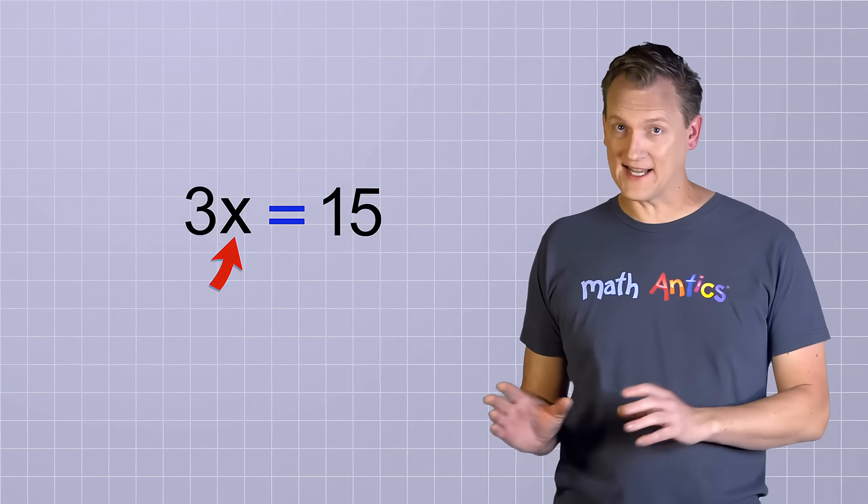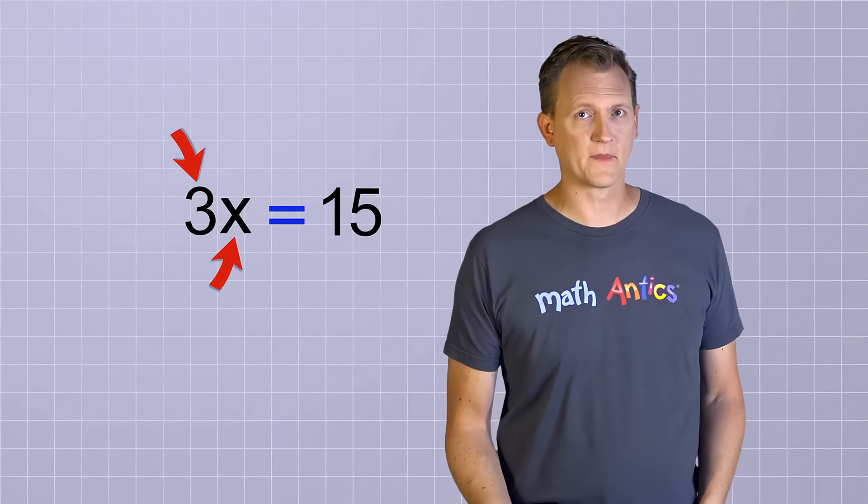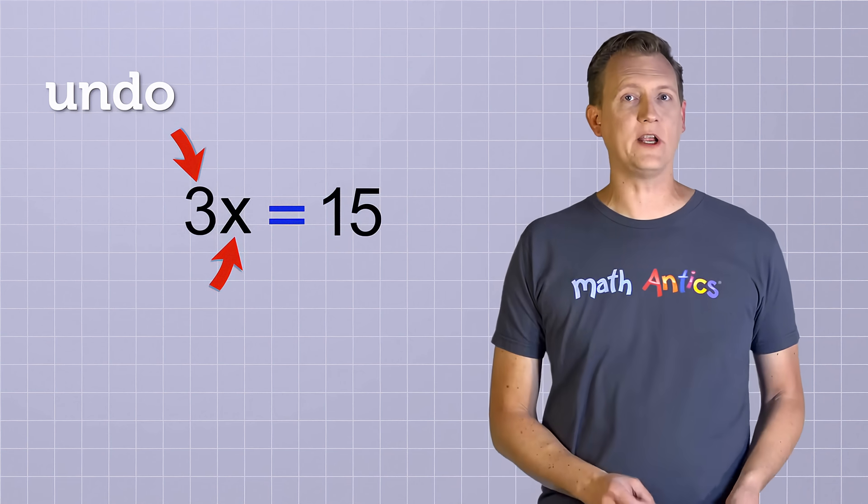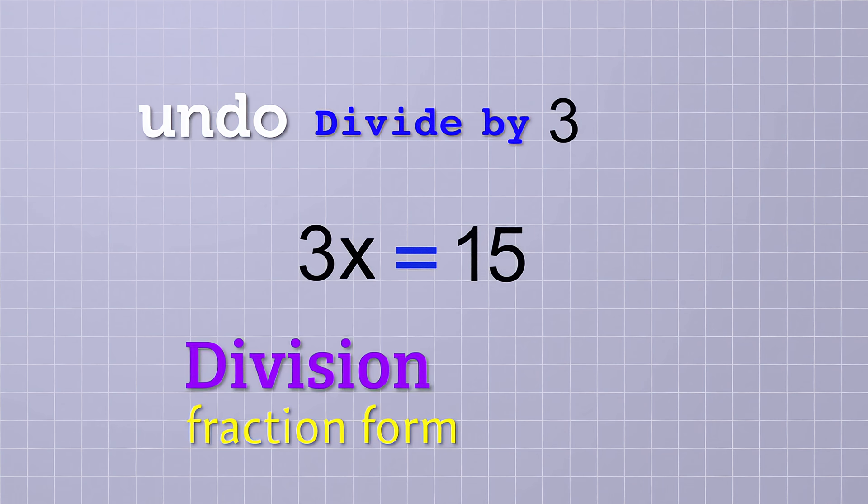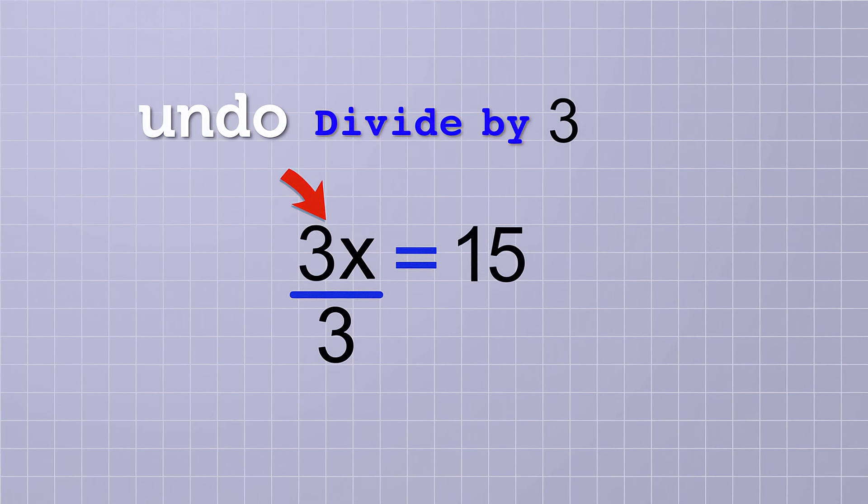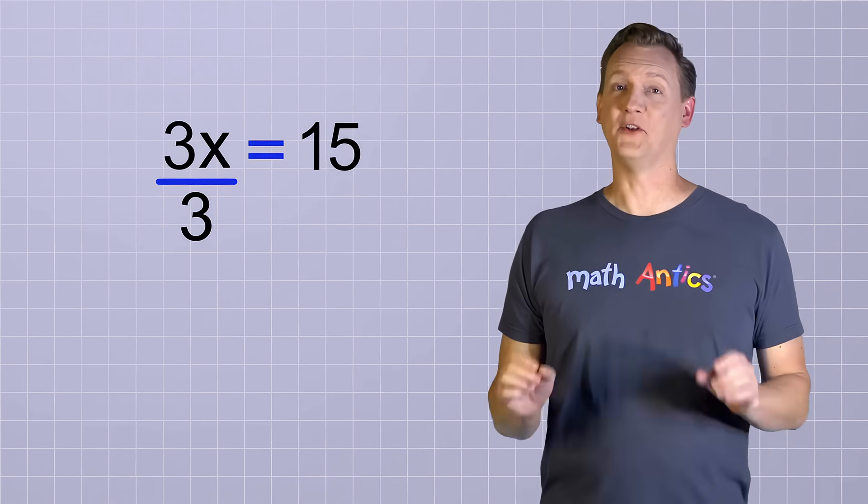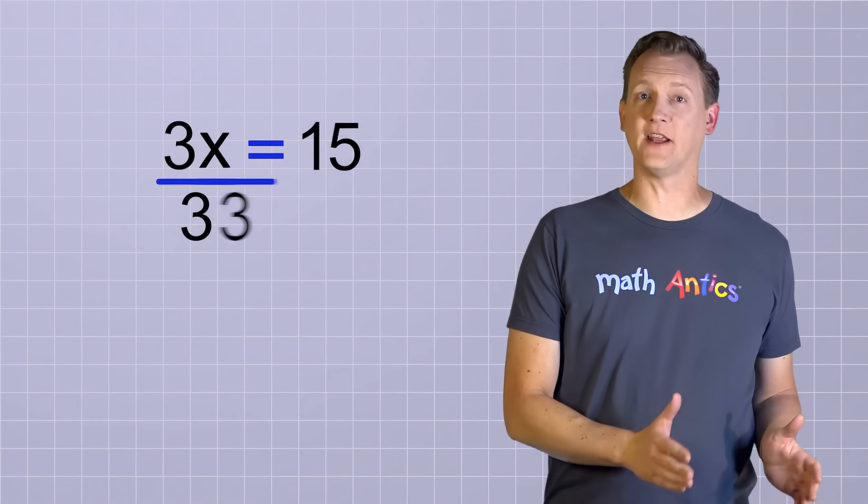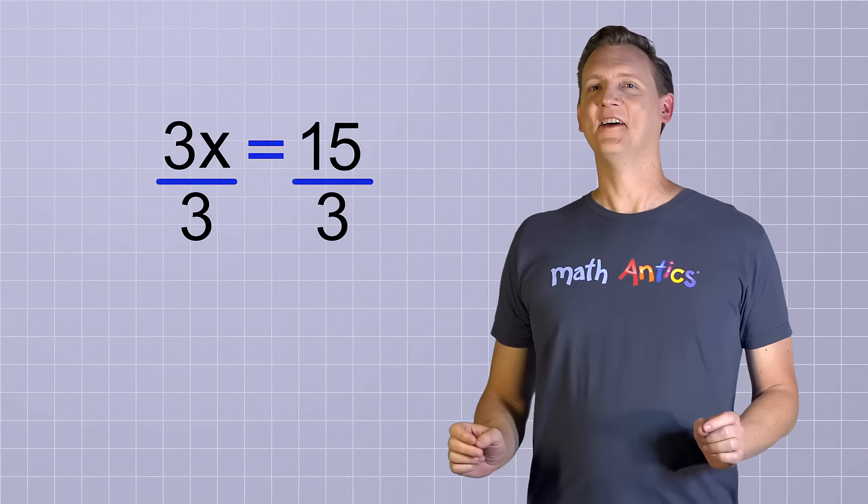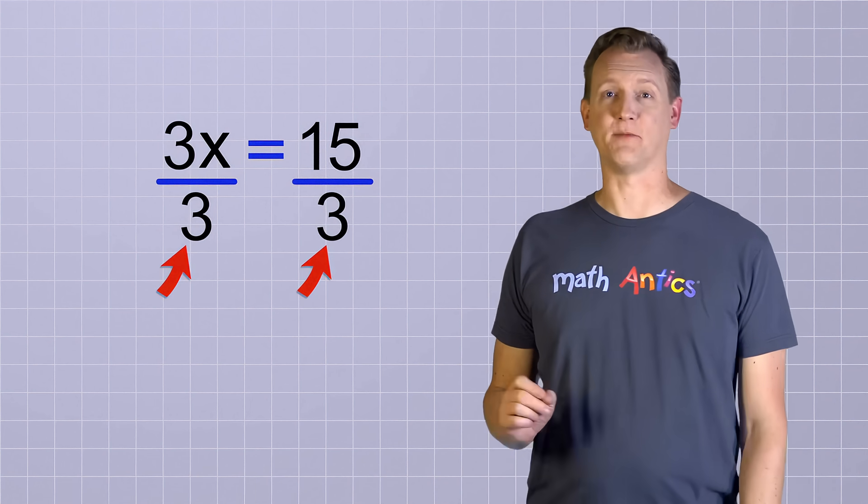Right now, the x is not by itself because it's being multiplied by 3. So to undo that operation, we need to divide that side by 3. In algebra, we almost always write division in fraction form. So to divide this side by 3, we just write a fraction line under it and we put a 3 below the line. There, this means 3 times x divided by 3. But don't forget our rule for rearranging equations. We have to do the exact same thing to the other side to keep the equation balanced. That's better, now both sides are being divided by 3.